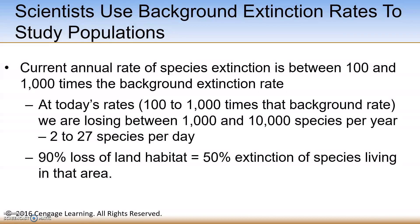Scientists use background extinction rates to study populations. The current annual rate of species extinction is between a hundred to a thousand times that of the background extinction rate. They determine background extinction rates by comparing human development with fossil records of extinctions that occurred before human development. They observe how decreases in habitat affect extinction and use mathematical population viability analysis models to estimate the risk of a particular species becoming endangered or extinct within a certain time frame.